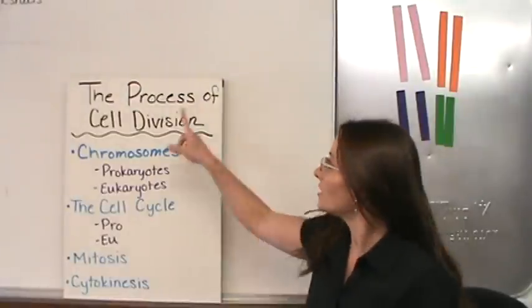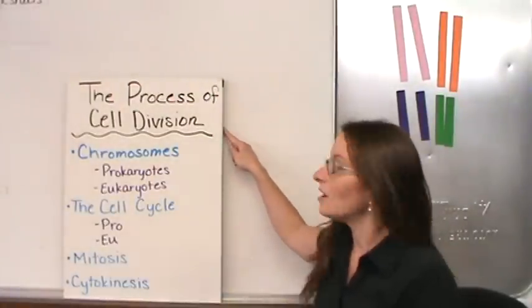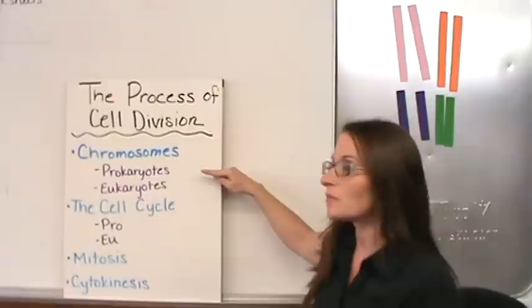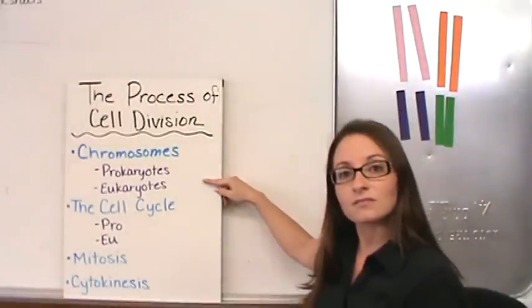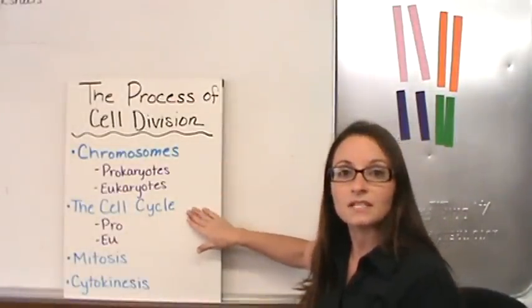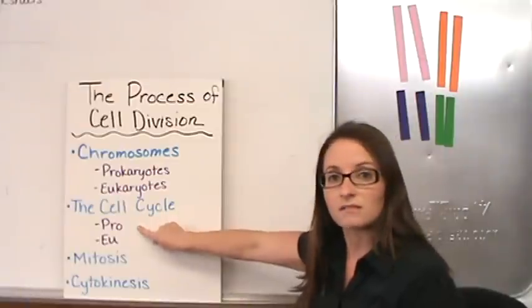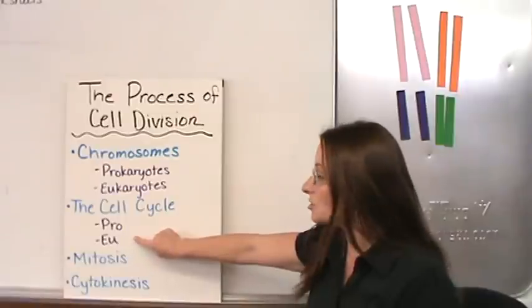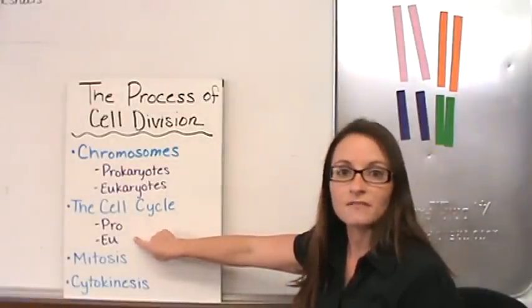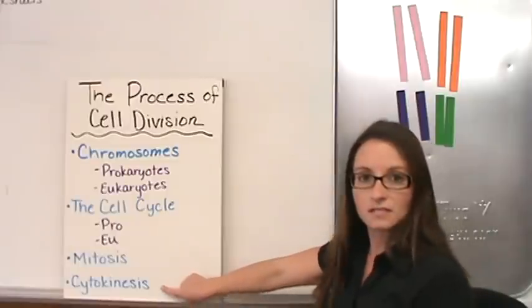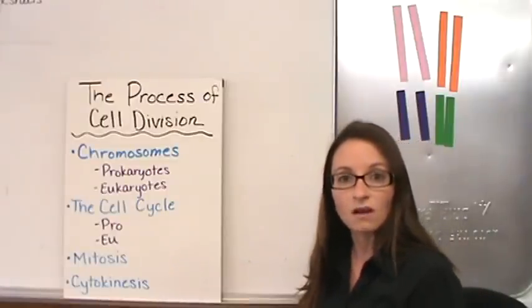Welcome to today's lesson on the process of cellular division. We're going to talk about the chromosomes in both prokaryotic and eukaryotic cells, the differences there. We're also going to talk about the cell cycle - it's very simple in prokaryotic cells and then a lot more complicated in eukaryotic cells. In eukaryotic cell cycle, they have two other pieces called mitosis and cytokinesis, so we're going to walk through those two pieces also.